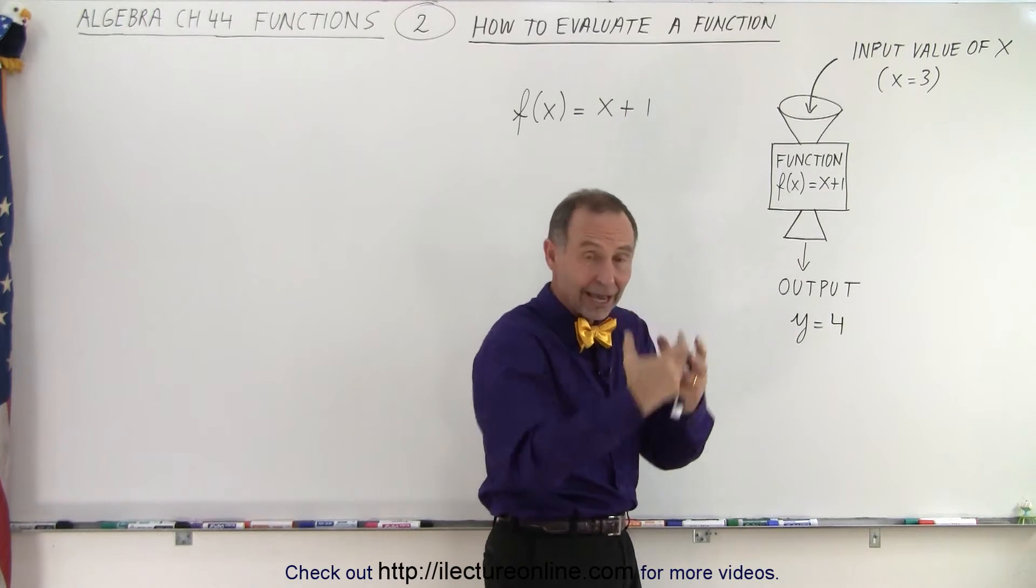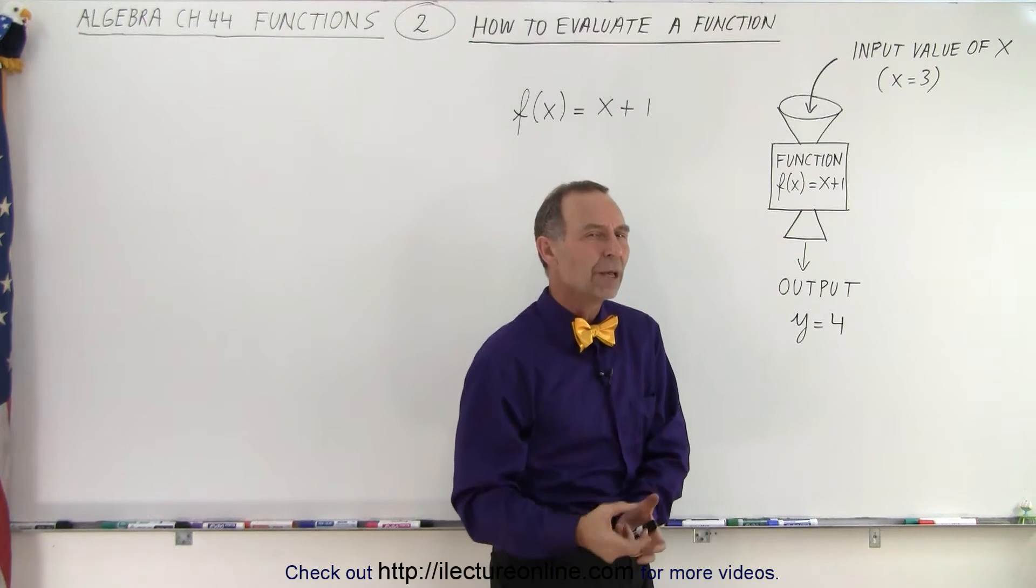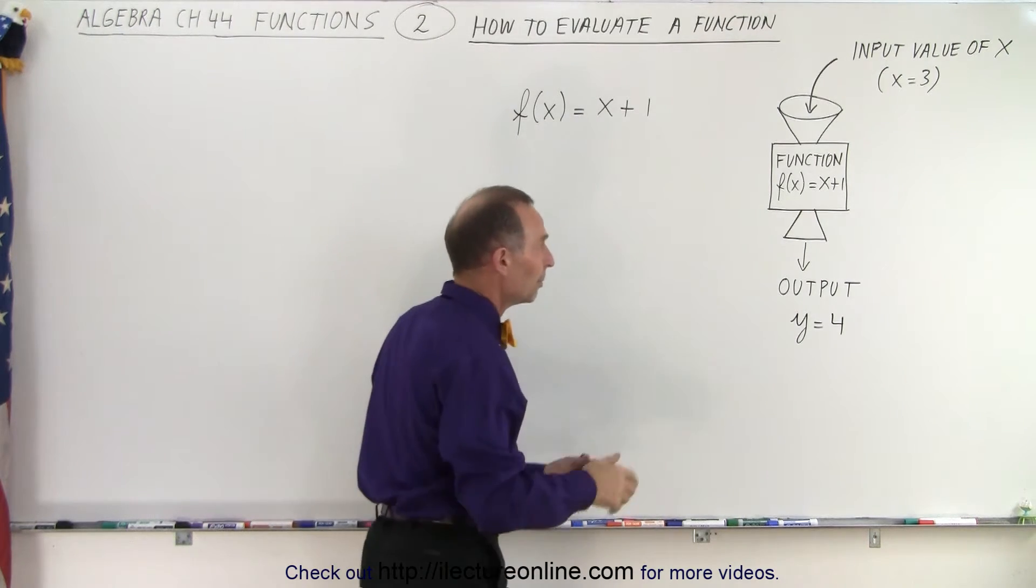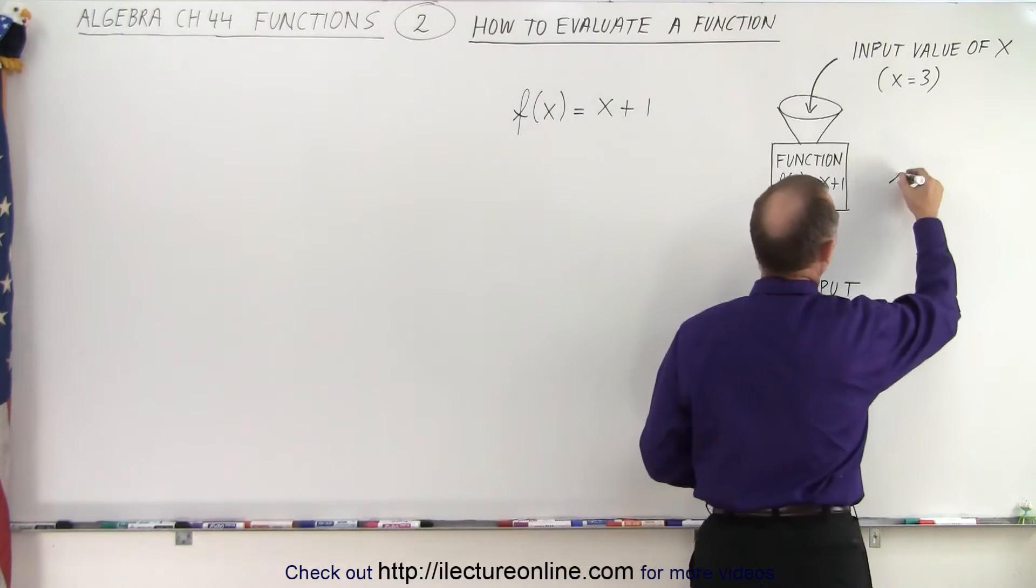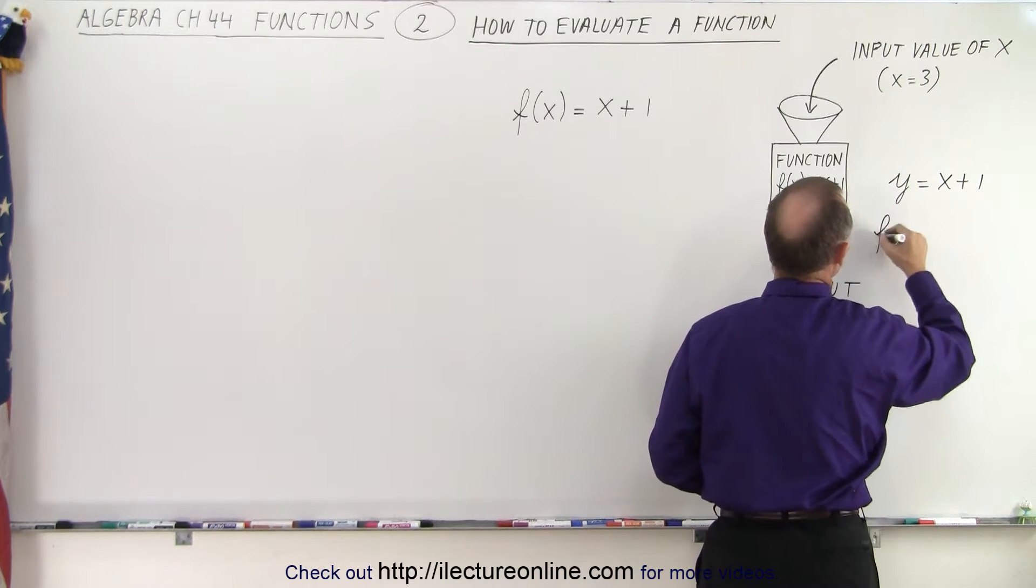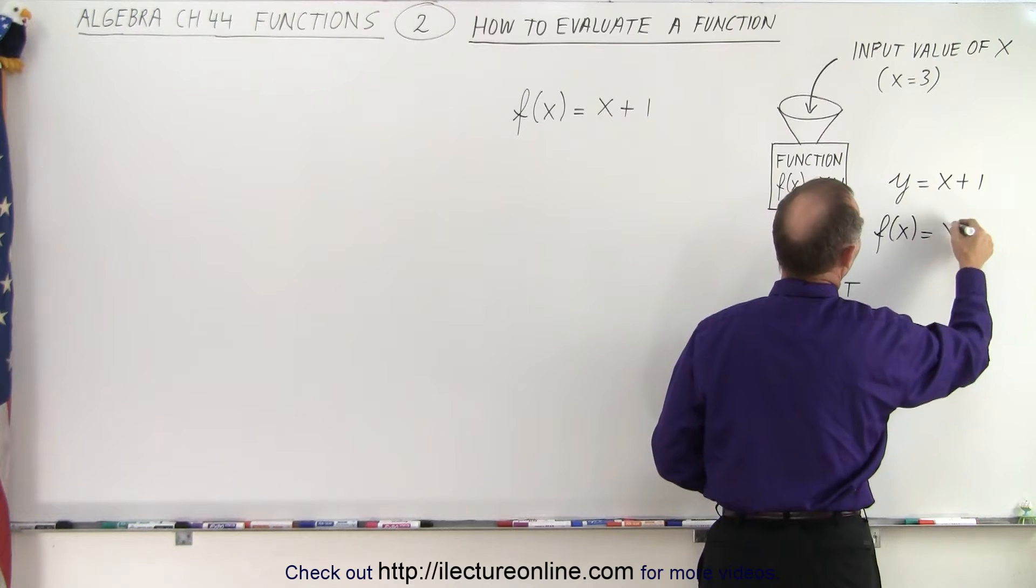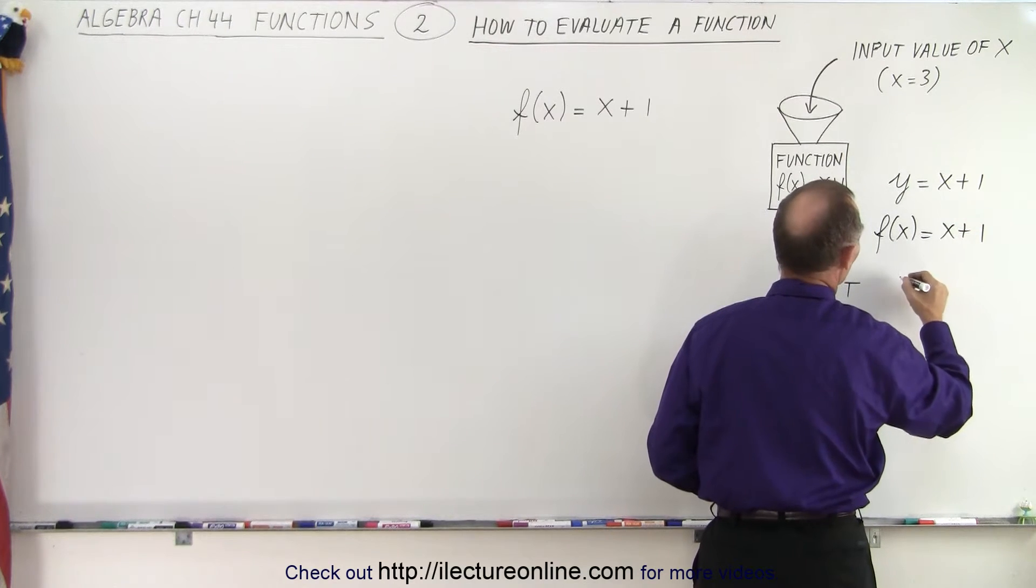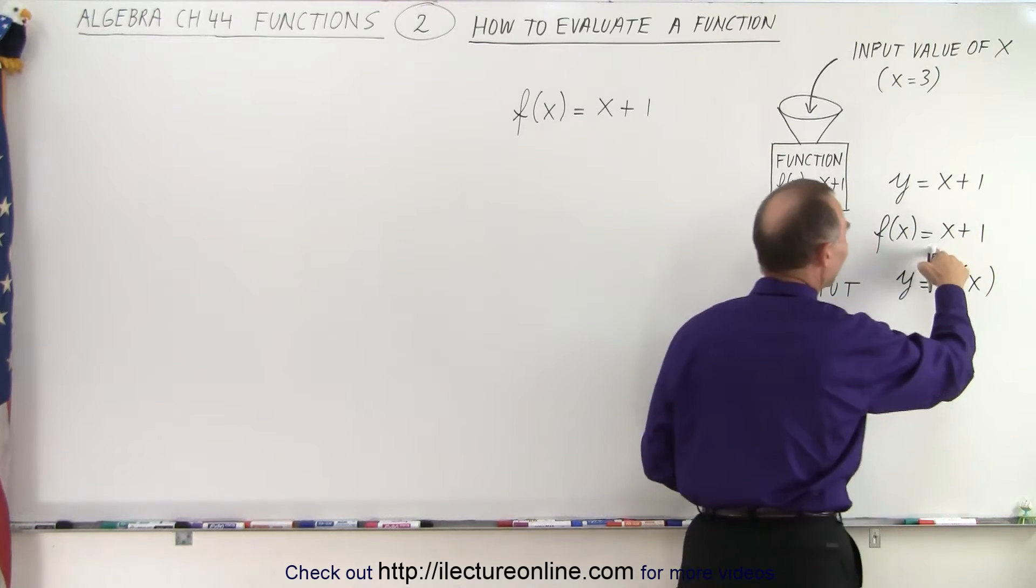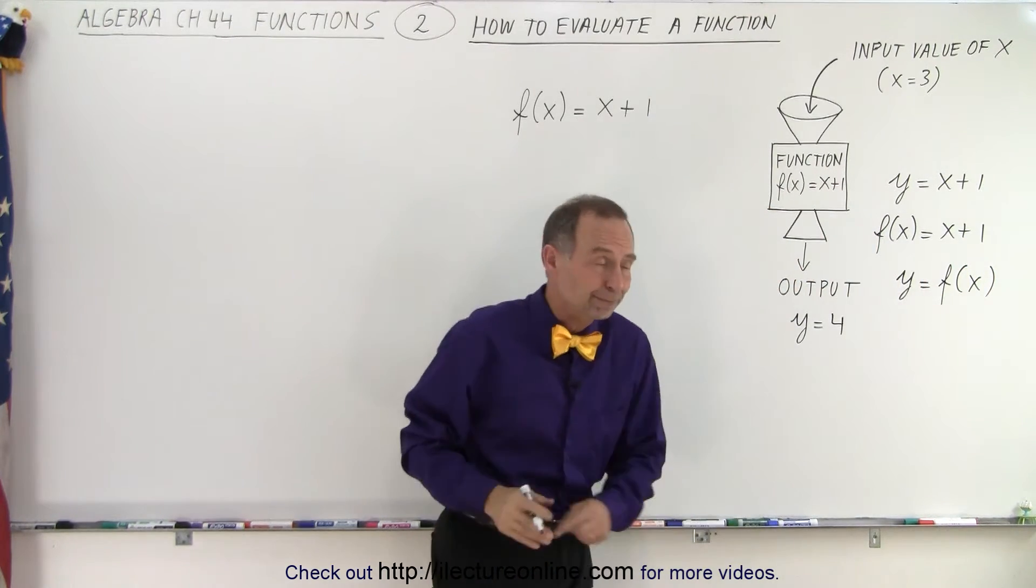You put in a value for x and out comes a value for y. But how do we write that? Well, we write that f(x) = x + 1. Remember that we started with y = x + 1, which means that f(x) = x + 1 because y equals a function of x. So we can write that because y is a function of x.